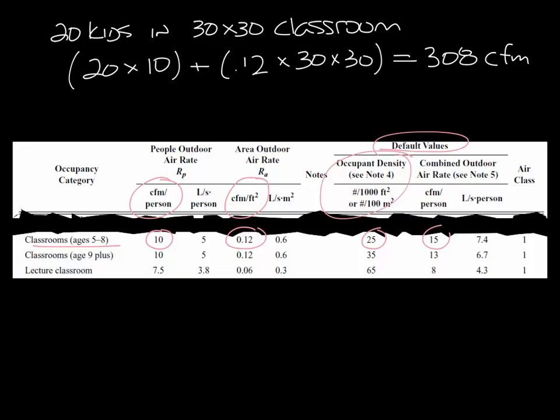So for that same classroom we have 25 per thousand square feet times 900 square feet, and then you multiply that by 15 CFM per person and you get 338 CFM of ventilation air that you need to bring into the space.